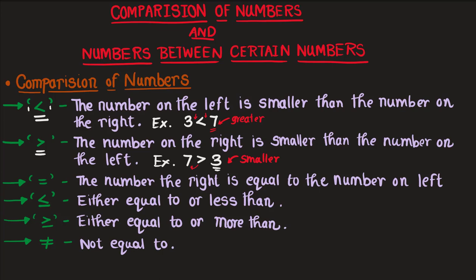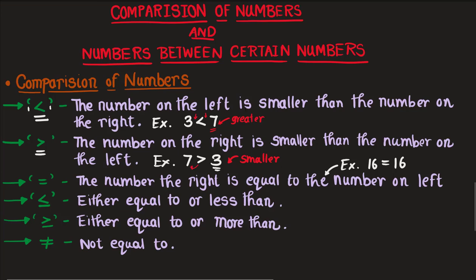The next sign is the equal-to sign. It indicates the number on the right side is equal to the number on the left. We already know that the equal sign indicates equality between two numbers. For example, 16 equals 16 — neither side is greater; both are equal.